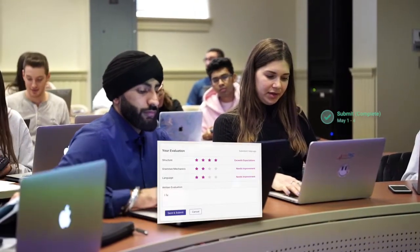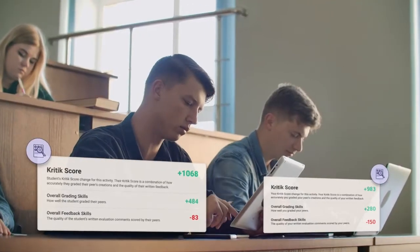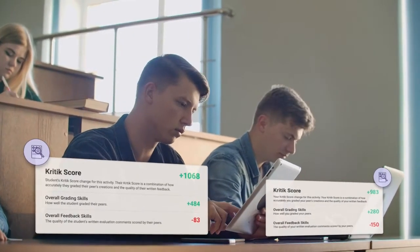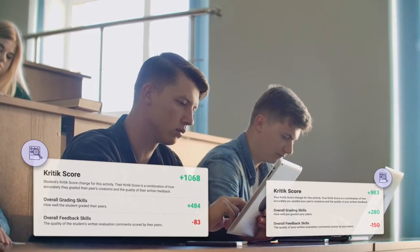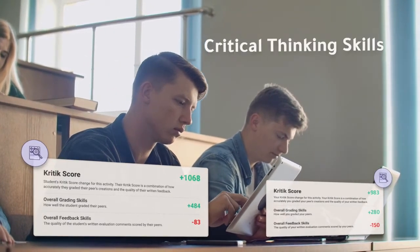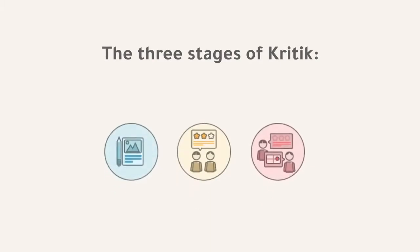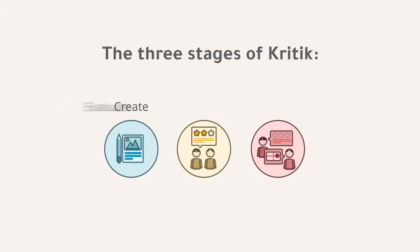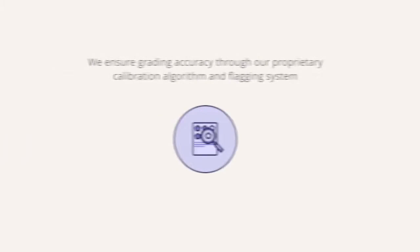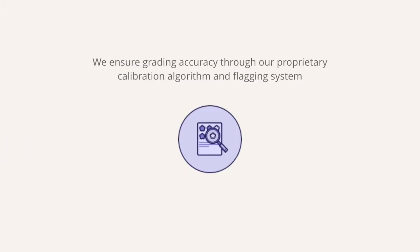Welcome to CRITIC, where you can develop students' higher-order thinking. It's a fun and interactive peer-to-peer learning platform that empowers you to assess students' critical thinking skills. We do so through three stages: create, evaluate, and feedback. We ensure grading accuracy through our proprietary calibration algorithm and flagging system.